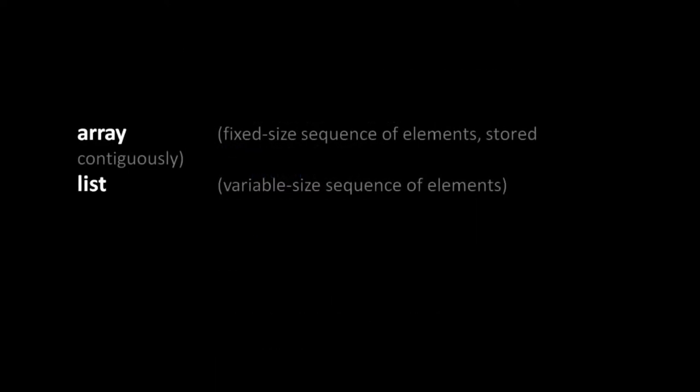An array is a sequence of elements stored contiguously, and importantly, those elements are all of the same type — they're homogenous — or at least all the same size. The array itself is of a fixed size; once it's created, it doesn't shrink or grow. A list, in contrast, is a variable-sized sequence of elements. The number of elements can actually change through the lifetime of the list. Likewise, the elements of a list need not all be the same type and size — they can be heterogeneous.